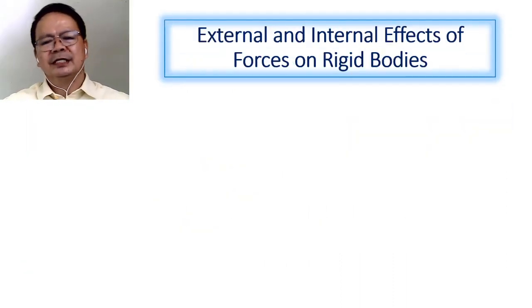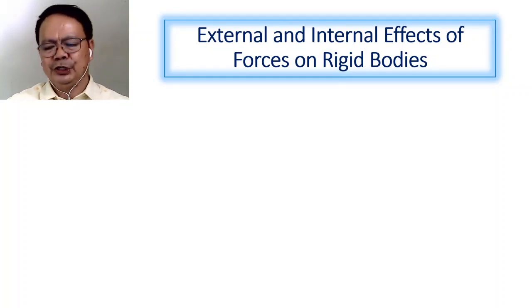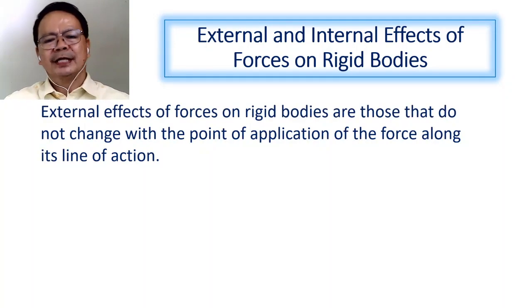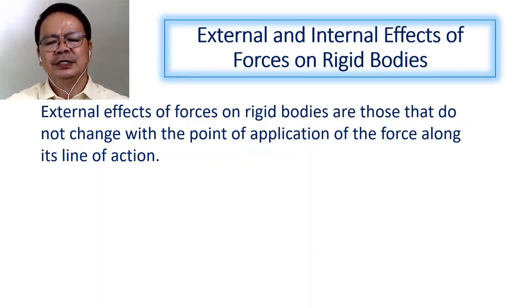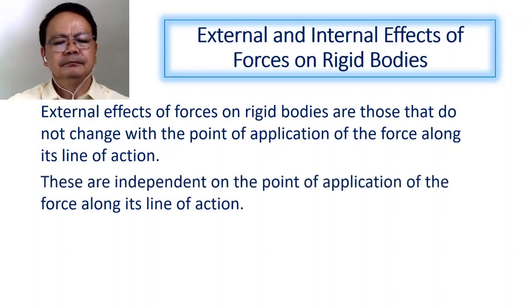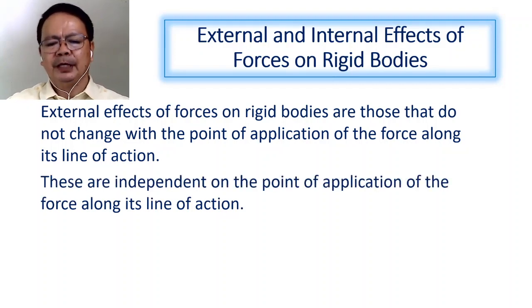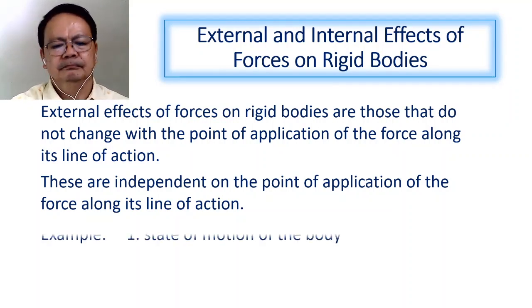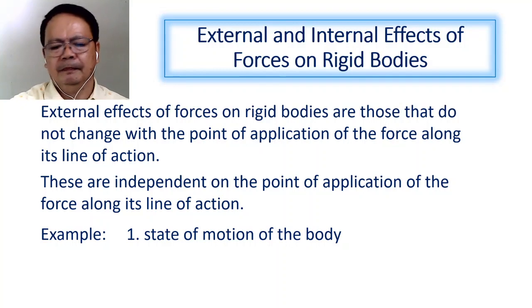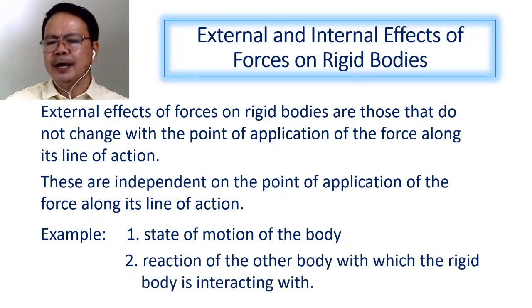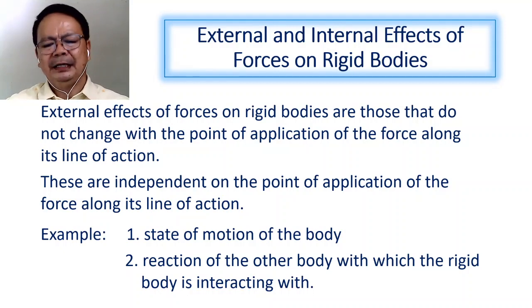Let us now discuss the external and internal effects of force on the rigid body. When we say external effect of force on the rigid body, these are those that do not change with the point of application of the force along its line of action — they are independent of the point of application. For example, the state of motion of the body is an external effect, and the reaction of the other body with which the rigid body is interacting is also an external effect.